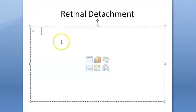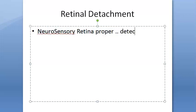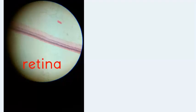So basically the neurosensory retina proper is detached from the pigment epithelium. To understand this, first we will have to look at the layers of the retina. This is not some planet — this is the retina histology.